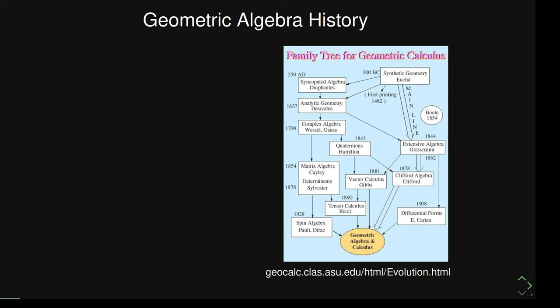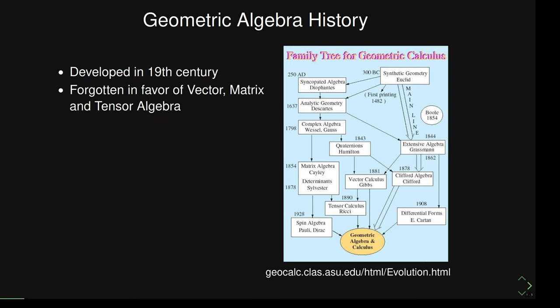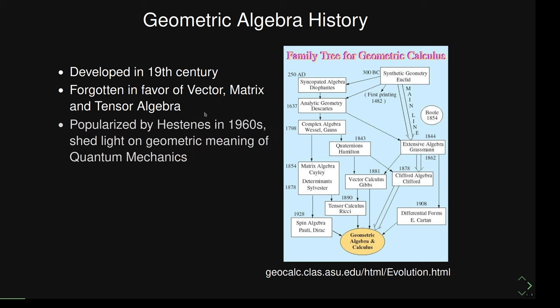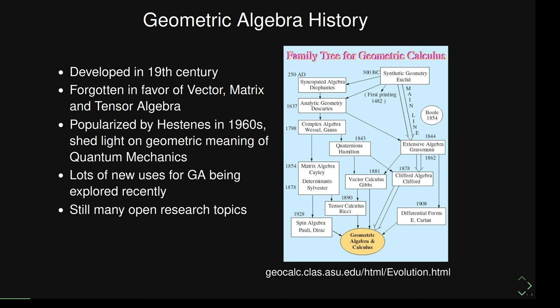Here's a brief history of GA. It was developed in the 19th century, but got kind of forgotten in favor of what we use now — vectors, matrices, and tensors. Around the 1960s it got picked up again by Hestenes, who found that it makes quantum mechanics very natural. He found a very concrete geometric meaning for the gamma matrices, for example. Since then there have been lots of new uses for geometric algebra found, and even now there's still a lot of open research, especially in the last couple of years.